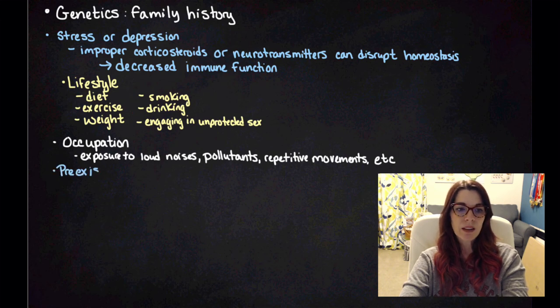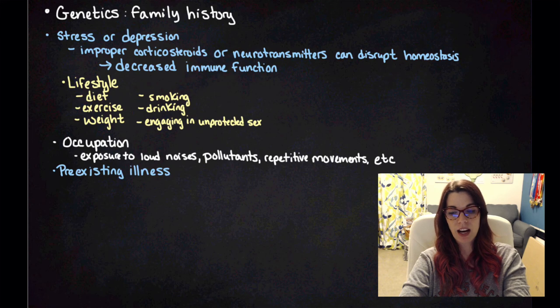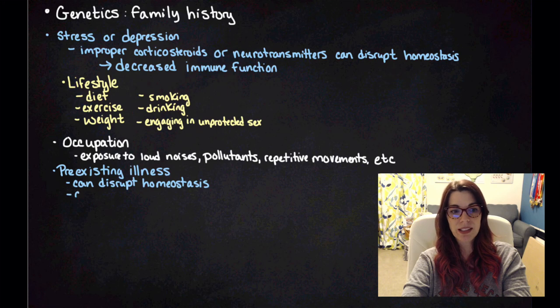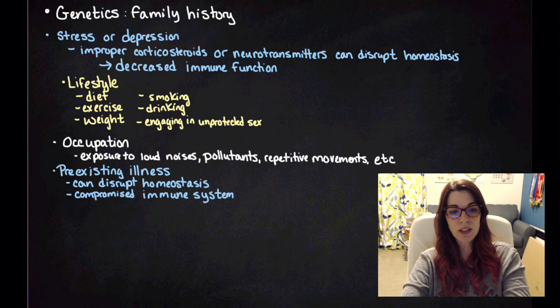Pre-existing illnesses are our next risk factor. That's just going to disrupt homeostasis. So if I have a pre-existing illness, I am not going to have an immune system that is functioning at optimal level. It's disrupted homeostasis, and then I'm going to have a compromised immune system, and that just puts me at higher risk for contracting new diseases.